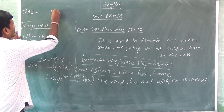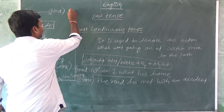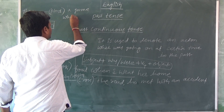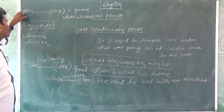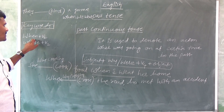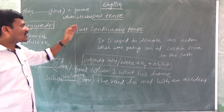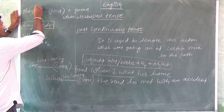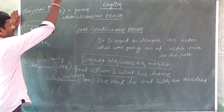One more example using 'while'. He was crossing the road — he met with an accident. So while he was crossing the road, he met with an accident. 'While' is the keyword here, followed by the past continuous form.